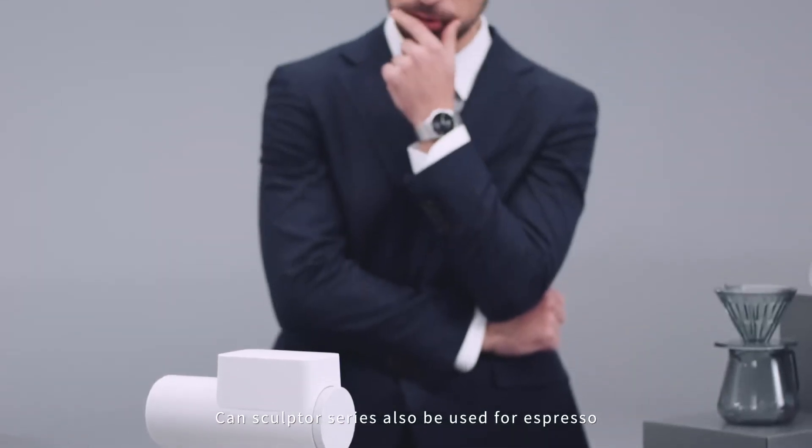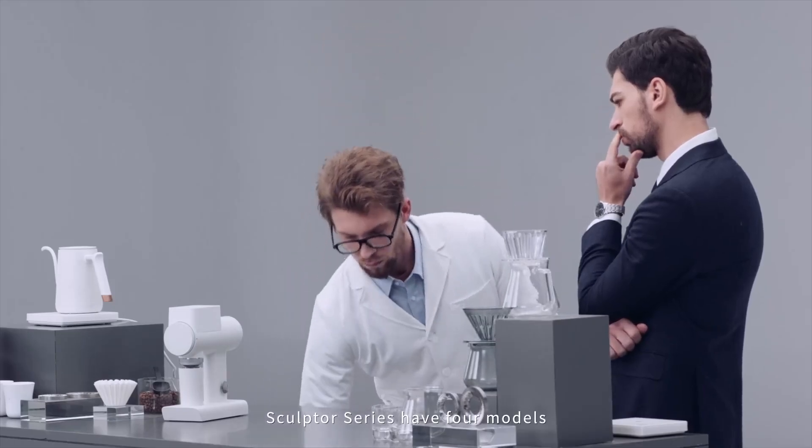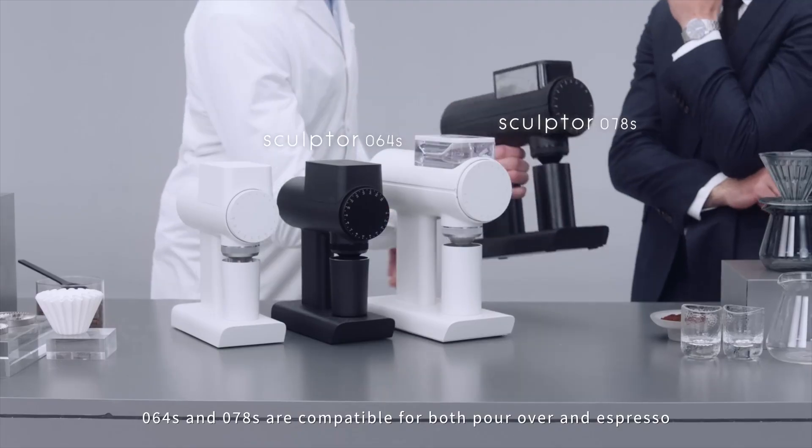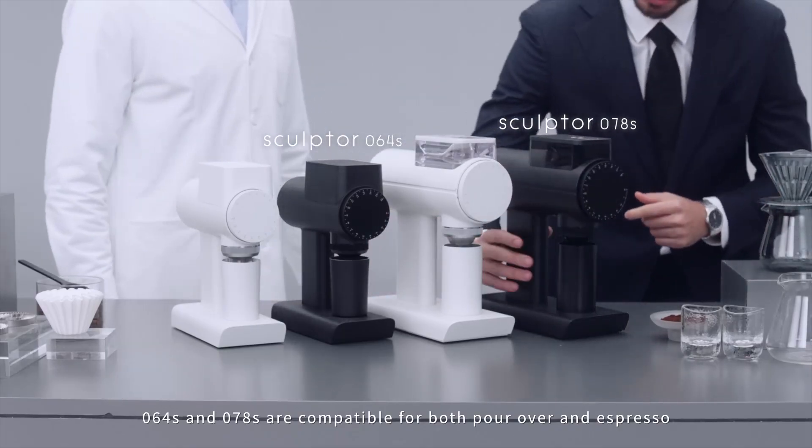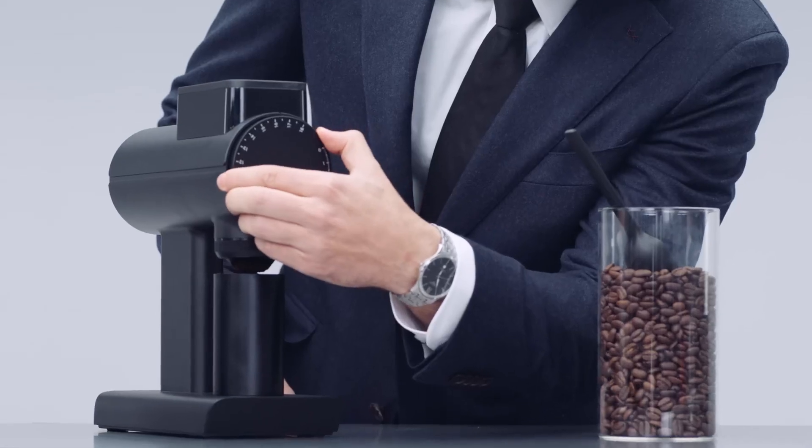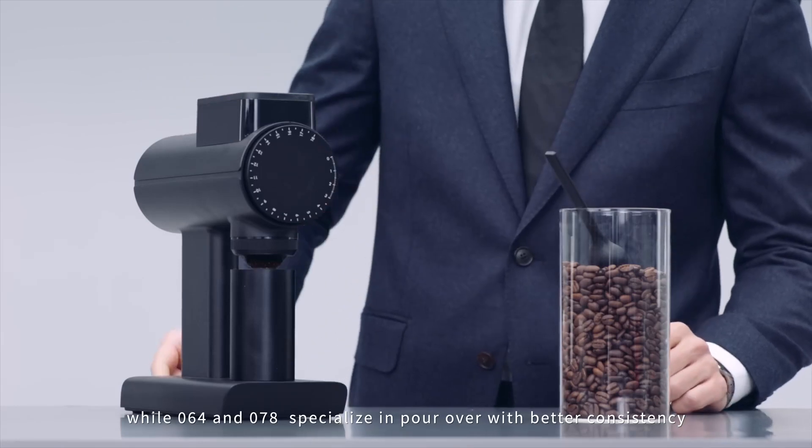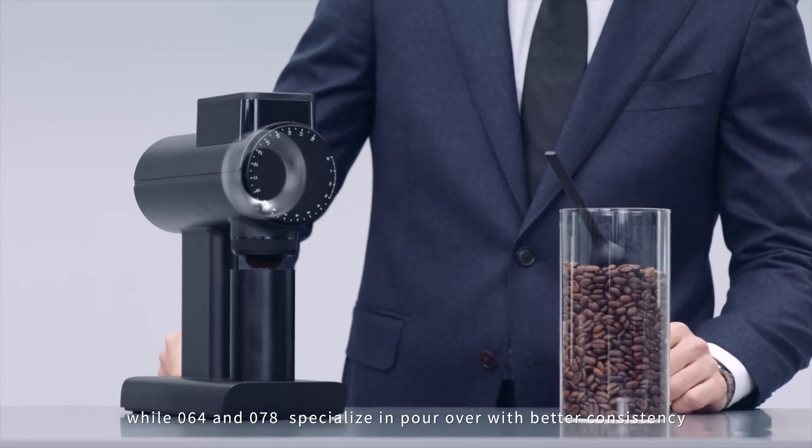Can the Sculptor series also be used for espresso? Sculptor series have four models. 064 S and 078 S are compatible for both pour-over and espresso, while 064 and 078 specialize in pour-over with better consistency.